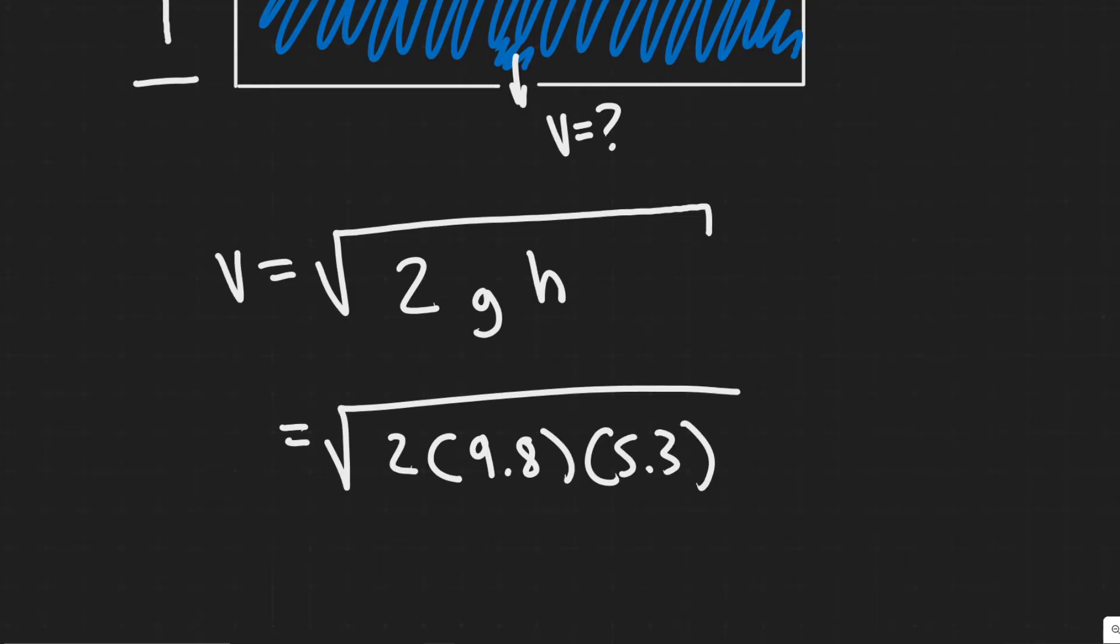So it's just a matter of plugging this in. So you have the square root of 2 multiplied by 9.8 multiplied by 5.3. So you're going to get the velocity in this case is 10.192.